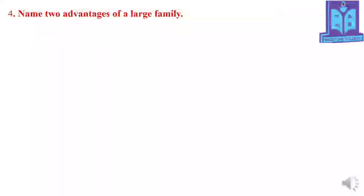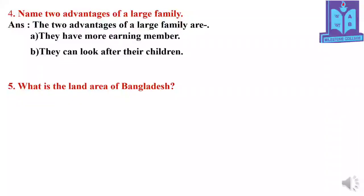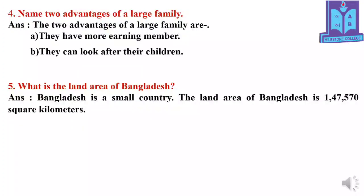Question 4: Name two advantages of a large family. Answer: The two advantages of a large family are: they have more earning members, and they can look after their children. Question 5: What is the land area of Bangladesh? Answer: Bangladesh is a small country. The land area of Bangladesh is 1,47,570 square kilometers.